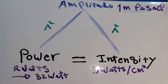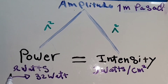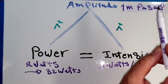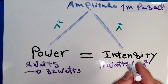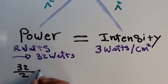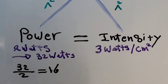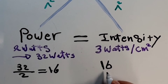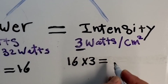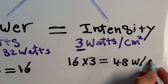Now we'll answer the quiz for example number three from the last lecture. We have an amplitude of one million pascals, an intensity of three watts per centimeter squared, and a power that increases from two watts to thirty-two watts. The power increased by a factor of thirty-two divided by two, which equals sixteen. The intensity will also increase by a factor of sixteen, so the final intensity is sixteen times three, which equals forty-eight watts per centimeter squared.